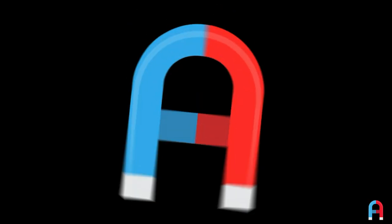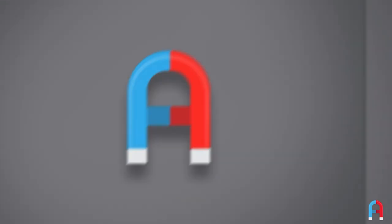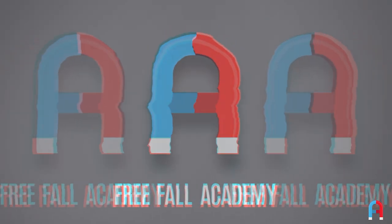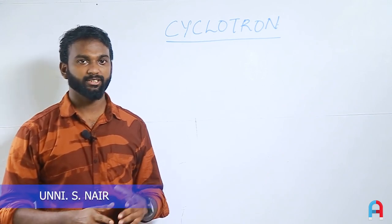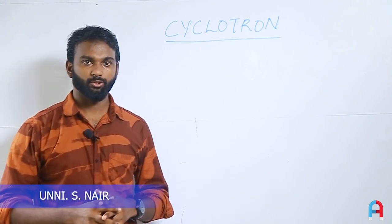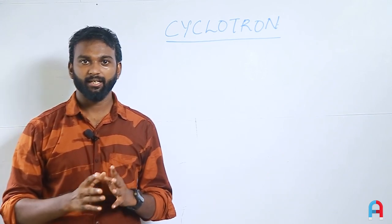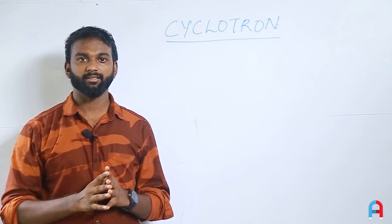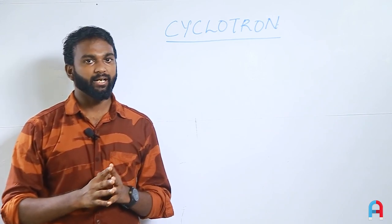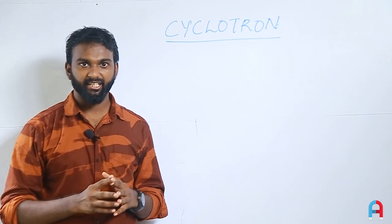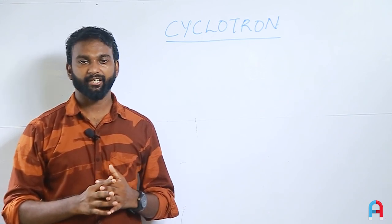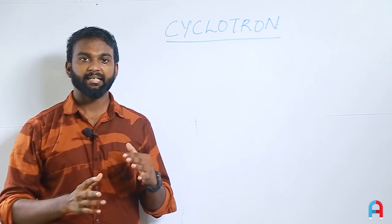Hi all, welcome to Freefall Academy. We are going to discuss the cyclotron at the higher secondary level. In 1929, Ernest O. Lawrence, a scientist, invented it. It is a particle accelerator. We are going to discuss the working, construction, and theory.